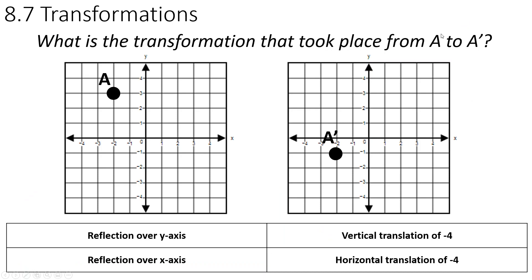Transformations from point A to the image of A or A prime. While it was at negative 2, 3, now it's at negative 2, negative 1. The only real thing you can say is that it dropped 4 or it went down. So that's a vertical change and translation is a slide and it's negative 4. That means it went down 4. So it's going to be that one choice. Moving on.